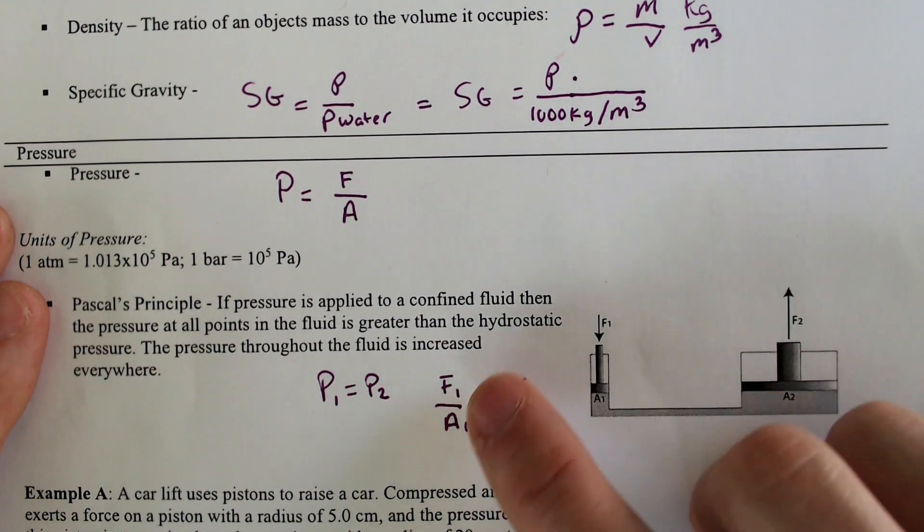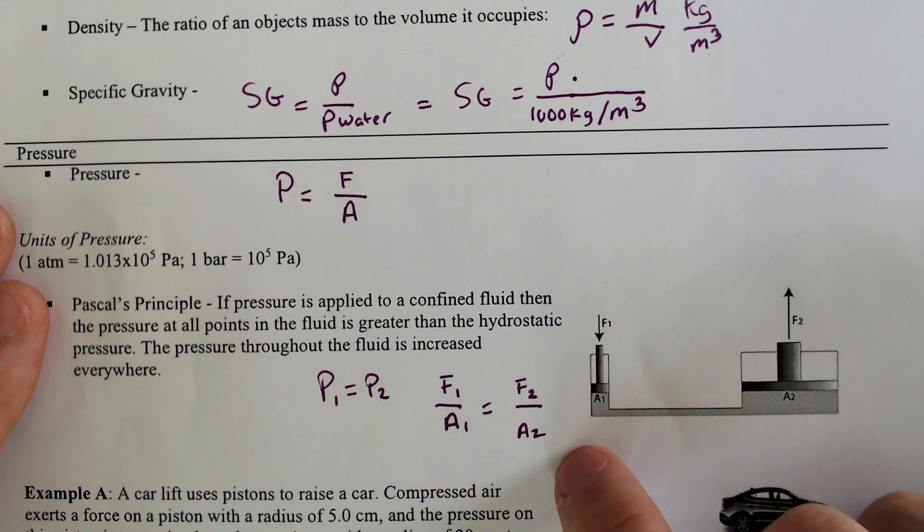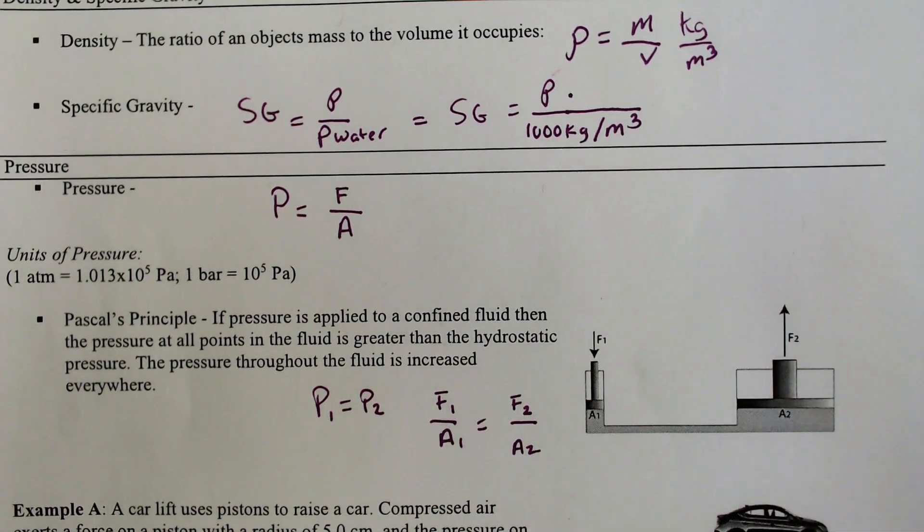Pressure of one will be the same as pressure of two. And that means that the force of one divided by the area of one will have to equal the force of two divided by the area of two. That's pressure in a nutshell.